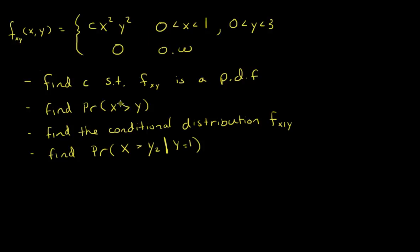Then we're going to talk about how to find the probability that x is greater than y, how to find the conditional distribution f of x given y, and then how to find the probability that x is greater than 1 half given y equals 1. I changed this slightly from the discussion board — it said the probability x is greater than 1 given y equals 1. But because of the support for this distribution, if x is more than 1, the distribution equals 0, so that probability would just be 0. I changed it to 1 half to make it slightly more difficult.